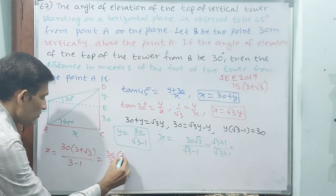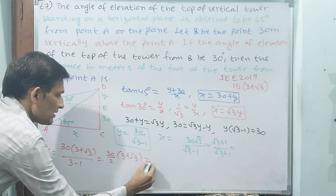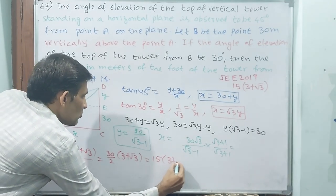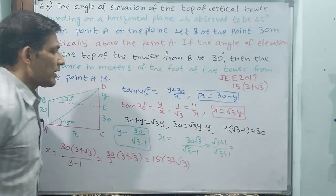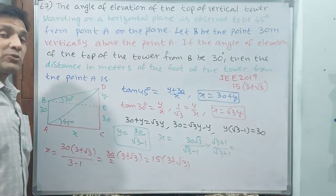Okay, 30 is still outside. See, 3-1 is 2, so 30/2 times (3+√3). So 15(3+√3) will be your answer. Let us go for the next question.